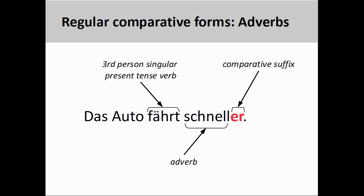Adverbs, which are words that change or modify the meaning of a verb, adjective, or other adverb, also have comparative forms. In the sentence 'das Auto fährt schneller,' or 'the car drives faster,' the comparative adverb 'schneller' does not modify the subject of the sentence, 'das Auto,' but rather it describes the manner in which the car drives. The adverb therefore modifies the third person singular present tense verb form of 'fahren,' which is 'fährt.' You will notice that the comparative form of adverbs is similar to the comparative form of adjectives.